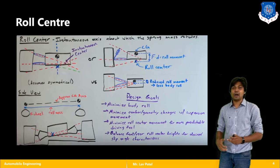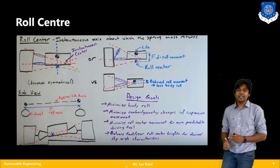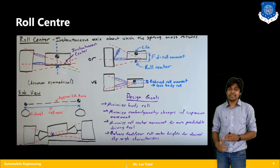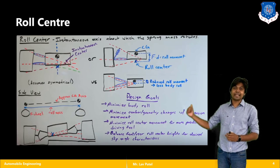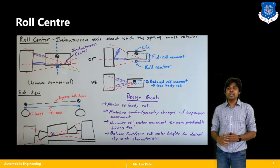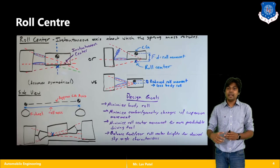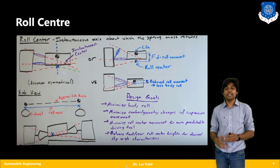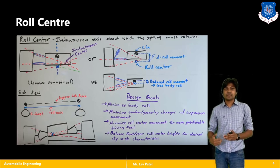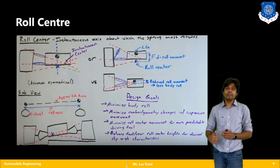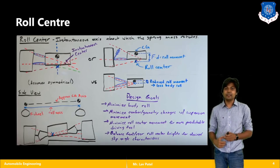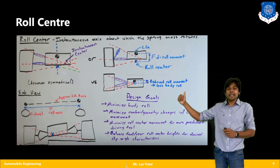To find the roll center we need three imaginary axes: first is the upper arm, second is the lower arm, and third is the contact patch at the tire. The intersection of these three lines gives us the instantaneous center, which we have already discussed. That center is found where the upper arm and lower arm lines from one tire intersect with those from the other tire, giving us two instantaneous centers for left and right sides, from which we determine the roll center.